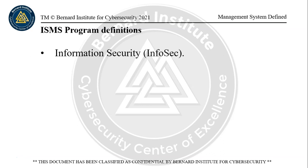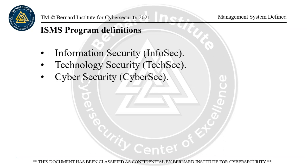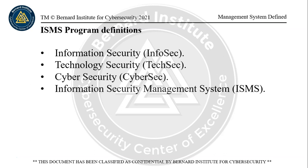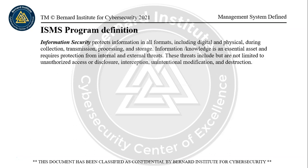We're going to review information security — what it is — technology security, which is different than information security, and cybersecurity, which is even more different. And of course, then there's the information security management system, which is what we're going to get to. Information security protects information in all formats, including digital and physical, during the collection, transmission, processing, and storage. This is sort of the life cycle of information.